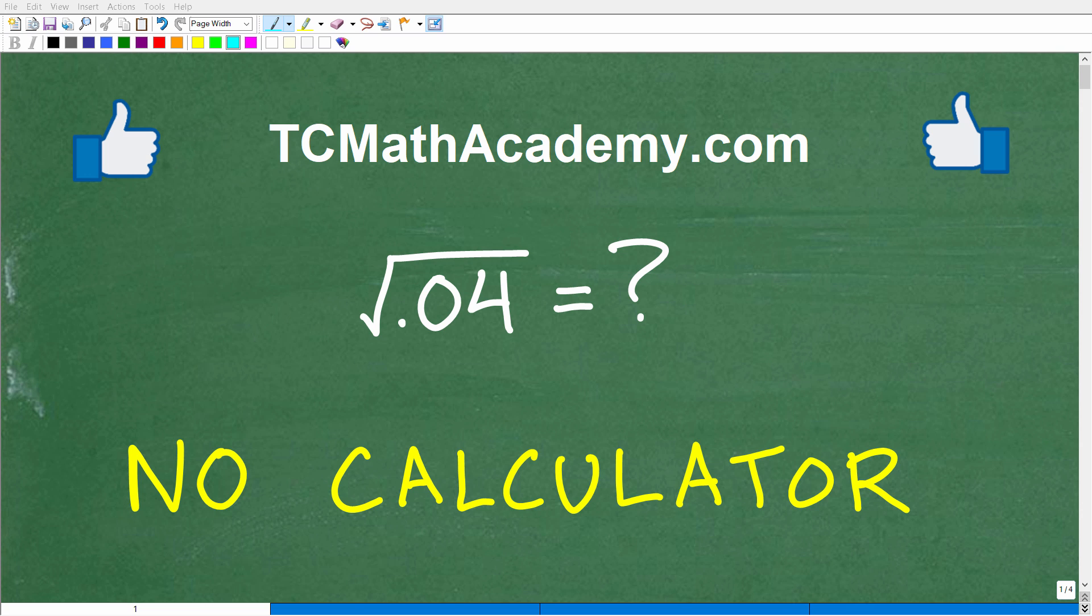Okay, so if you have strong basic math skills and know a thing or two about square roots, then this should be an easy problem for you to do without the aid of a calculator. So let's go ahead and take a look at the problem. The question here is the square root of 0.04, what is this equal to?